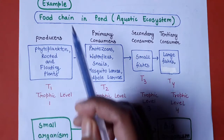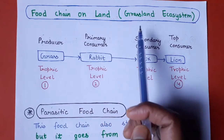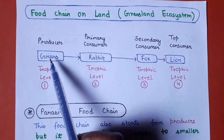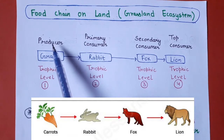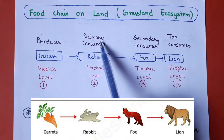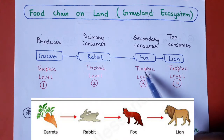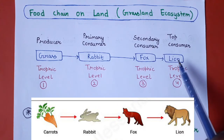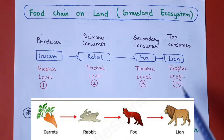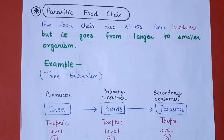Second example humara hai food chain on land — grassland ecosystem ka example. Sabse pehle grass hai jo green in nature hai aur ye producers hain, trophic level 1. Grass par rabbit feed kar raha hai — rabbit trophic level 2 mein aayega aur ye primary consumer hai. Iske baad fox aayega jo rabbit par feed karta hai — trophic level 3, secondary consumer. Iske baad aata hai lion jo top consumer hai aur trophic level 4 mein aata hai.